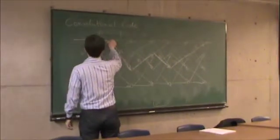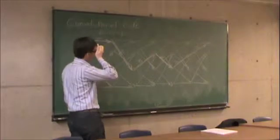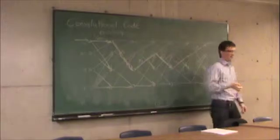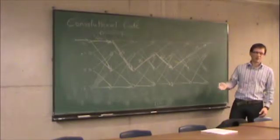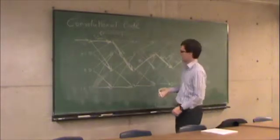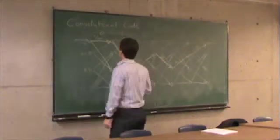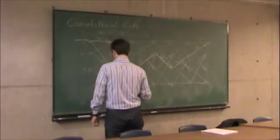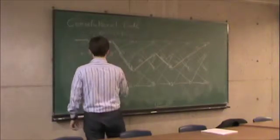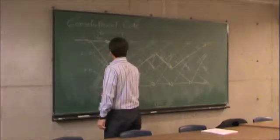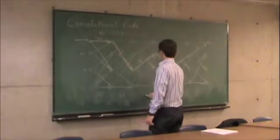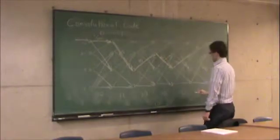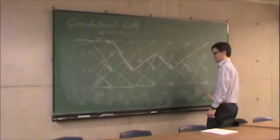And the cost associated with taking each path is the number of errors that you think happened if that was the true path. So for instance, let's look at this trellis section. So my output, let's actually write my output at the bottom: 00, 11, 10, 00, 10, 11. That's my output.